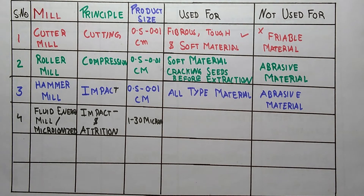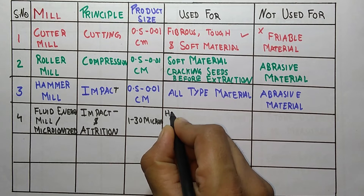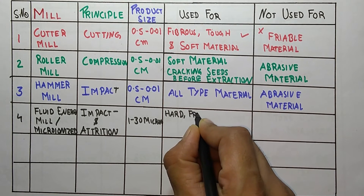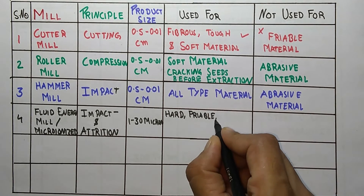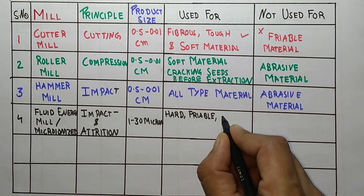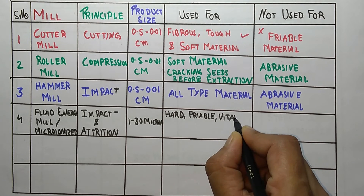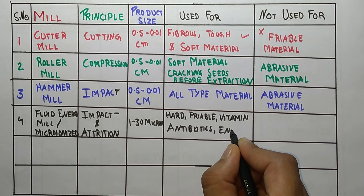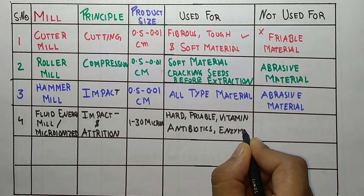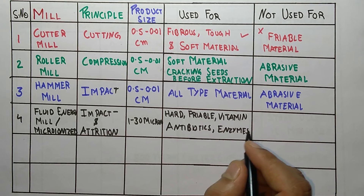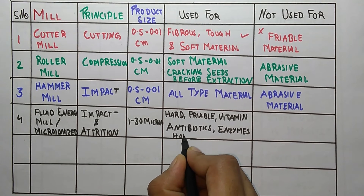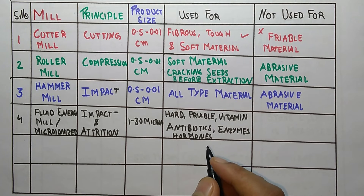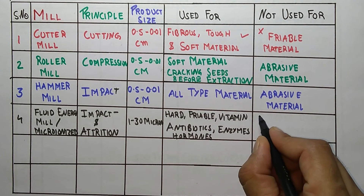Fluid energy mill is used for hard, friable materials, and also for vitamins, antibiotics, and hormones. It is not used for soft materials.